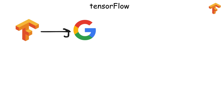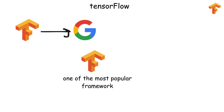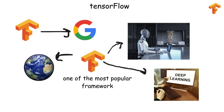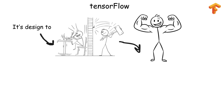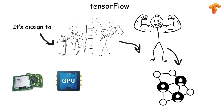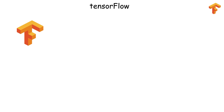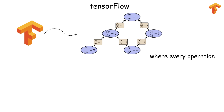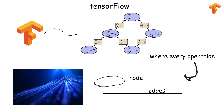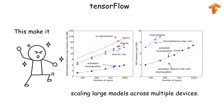TensorFlow, developed by Google, is one of the most popular frameworks for machine learning and deep learning. It's designed to build and train neural networks efficiently on CPUs, GPUs, and even TPUs. TensorFlow uses something called computational graphs, where every operation is represented as a node and edges represent data flow. This makes it powerful for scaling large models across multiple devices.